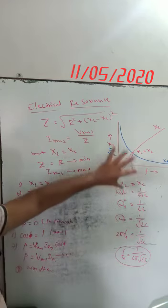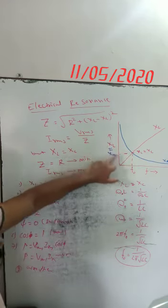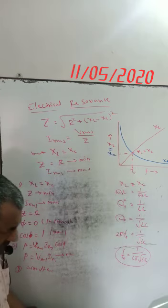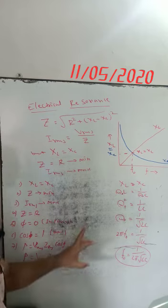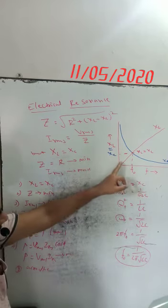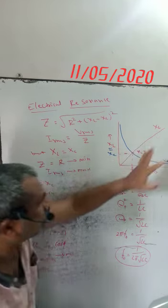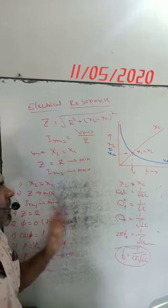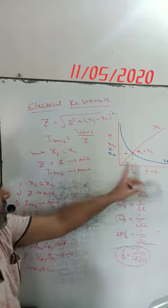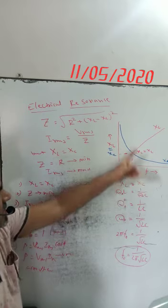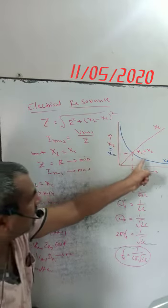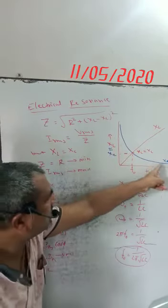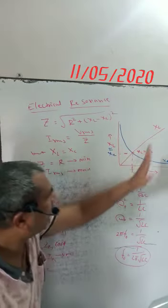Now see this graph. When the graph is plotted — XL against frequency F — in the pure inductive circuit, XL and F vary directly. Hence a linear curve is obtained. But in the capacitor circuit, XC and F vary inversely. Hence a rectangular hyperbolic curve is obtained. This is the curve for XC and this linear curve for XL.